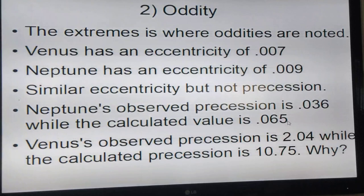Neptune's observed precession is 0.036 arc seconds per century. Using relativity, calculated is 0.065, which is close enough. But when it comes to Venus, the precession is measured as 2.04 but when you calculate it it's 10.75. So relativity has a problem here. The question is, why is there such a problem?